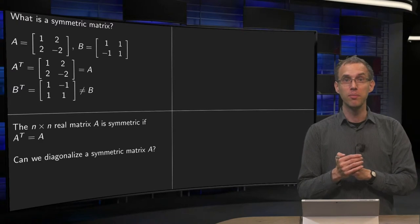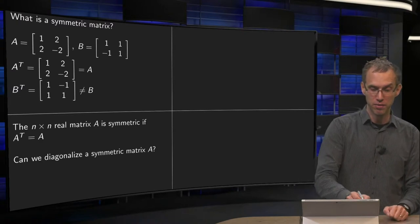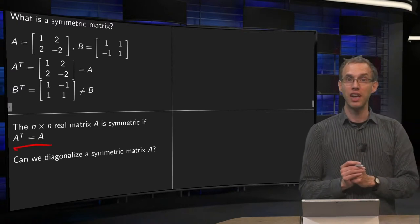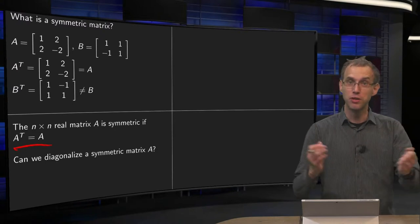The n times n real matrix A is symmetric if A transpose equals A. That is what a symmetric matrix is.